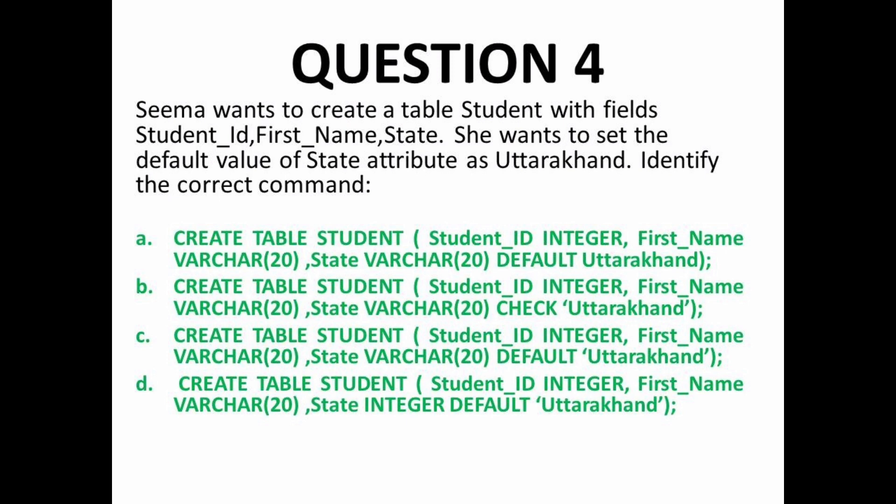Next MCQ: Sima wants to create a table 'student' with fields student_id, first_name, and state. She wants to set the default value of the state attribute as 'Uttarakhand', so a DEFAULT constraint will be used. We need to identify the correct command. The syntax is: CREATE TABLE, then the table name, then parentheses, then column name, data type, and constraint if any, then a comma for the next column, and finally close parentheses and semicolon.